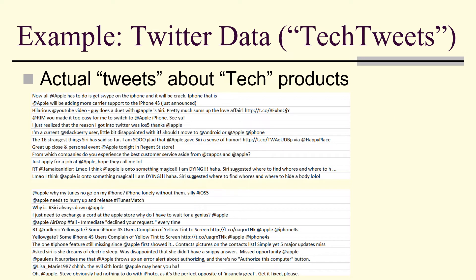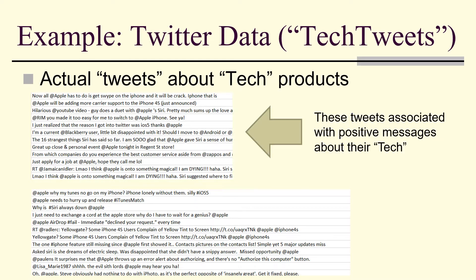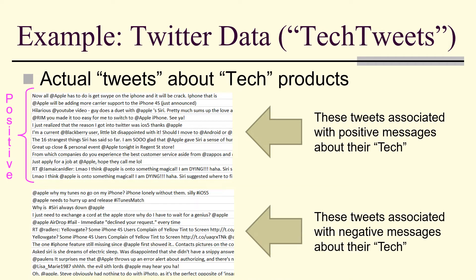For example, here's some Twitter data. This is from a data set called Tech Tweets. And these are actual tweets about tech products. Now, in the collection of these tech tweets, it was determined that these tweets are associated with positive messages about their tech. These tweets are negative messages about that tech.